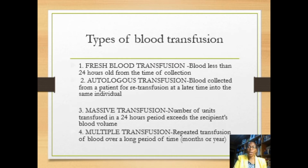There are four types of blood transfusion. The first is fresh blood transfusion, which is transfusion of blood less than 24 hours old. Because of the risk of transfusion, if one is going for elective surgery — say, cancer surgery — the patient could donate their own blood in advance and keep it aside to use during surgery. This is called autologous blood transfusion.